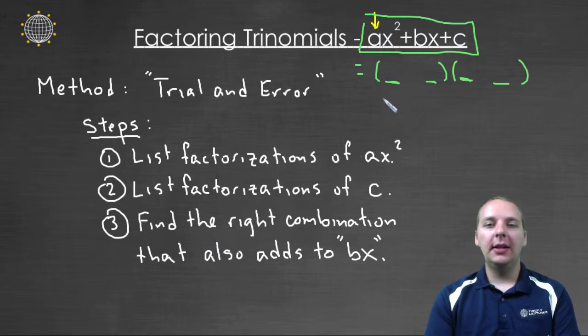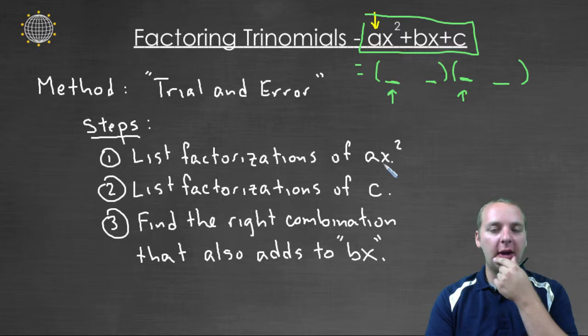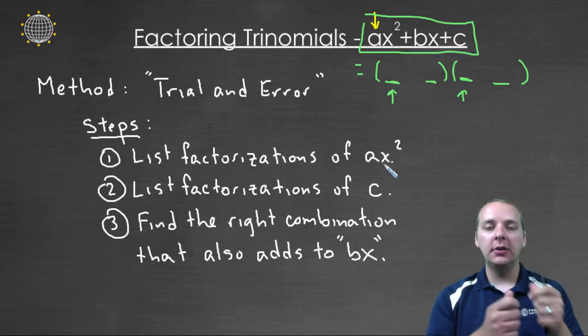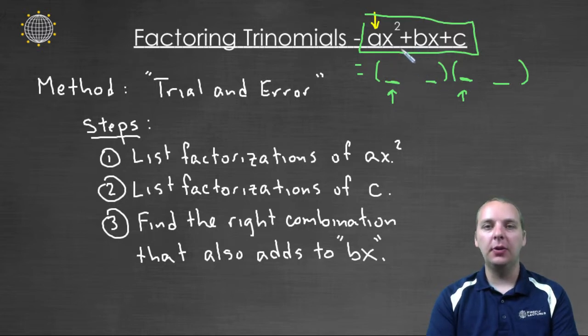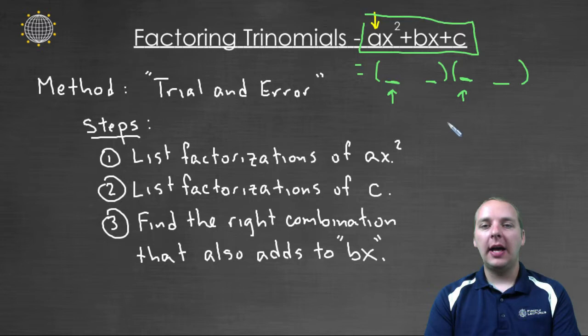So I know some things, for example, I know that the leading terms here and here would have to give me my ax squared. So that's why in step one I'm going to list the factorizations of ax squared. And there might be a couple of different factorizations, but one of those pairs will be my leading two terms here, assuming this guy really does factor. And then you have the outer and the inner that will combine to give you the bx, and then the last, the L, the last two terms will multiply to give you c right here. So I'm going to list the factorizations of c, and those are possibilities for the last two slots here.